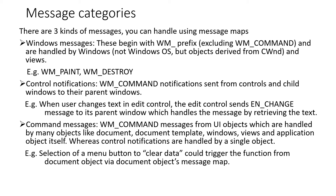The second type of message is the control notification. These are WM_COMMAND notifications that are sent from controls and child windows to the parent window, passing the message upward. For example, if a window has an edit control and the user changes that edit control, the edit control sends an EN_CHANGE message to its parent window, which can then handle it by looking at the text newly entered by the user.